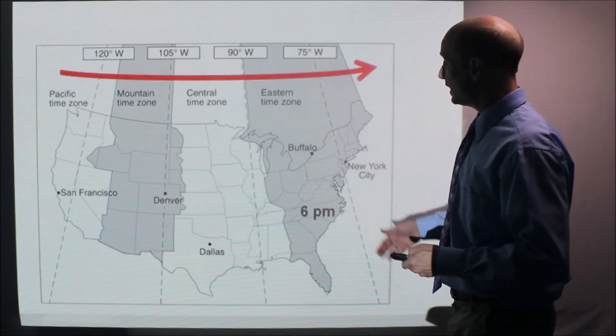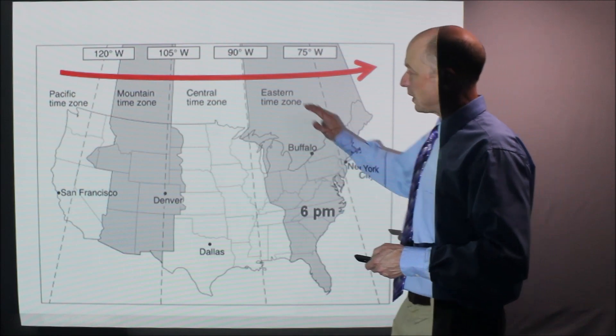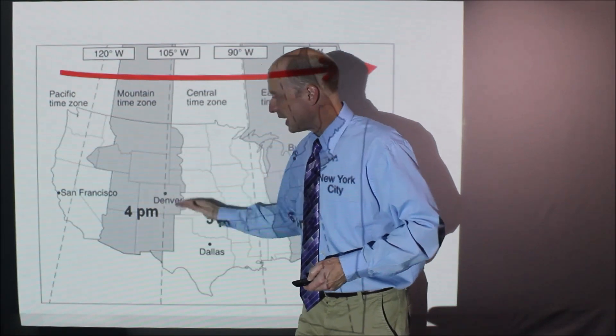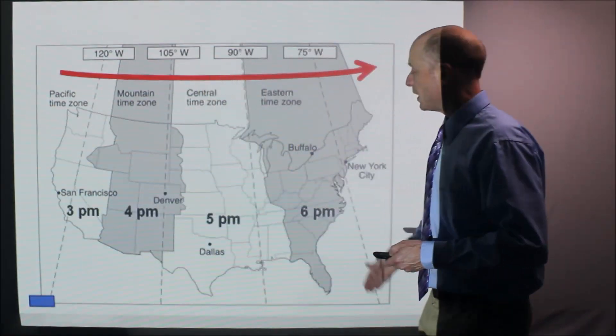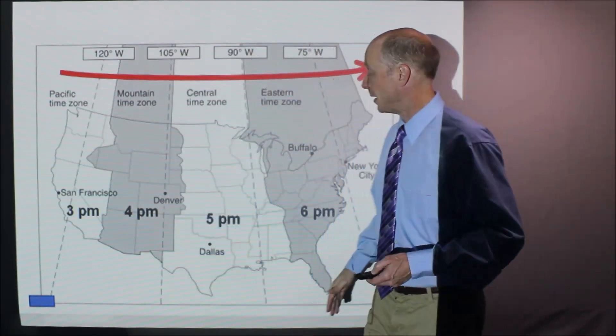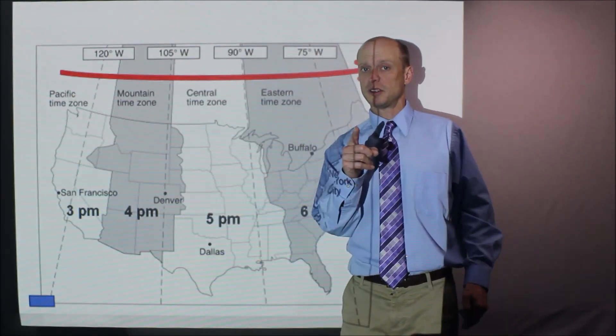So let's say it is 6 p.m. in the Eastern time zone. As you go this way, it's going to be one hour behind. So it's going to be 5 p.m. And then next one is 4 p.m. and 3 p.m. So it kind of shows this three-hour time difference from us in the Eastern time zone and the Pacific time zone. Important to know it.